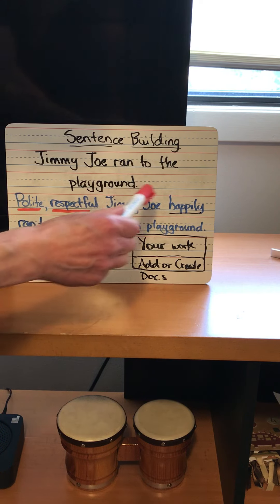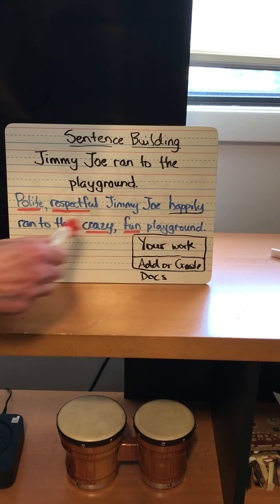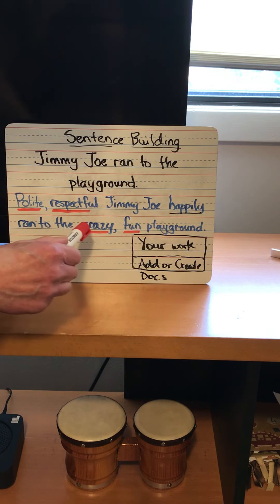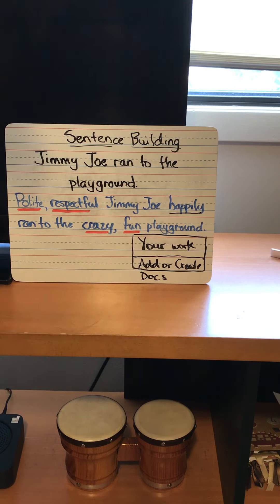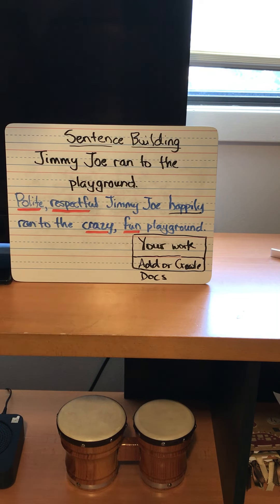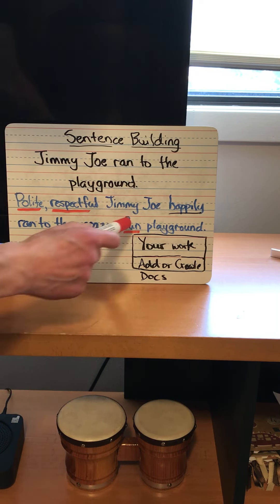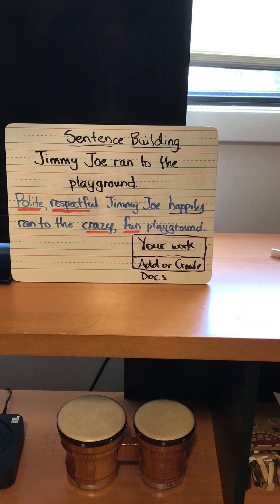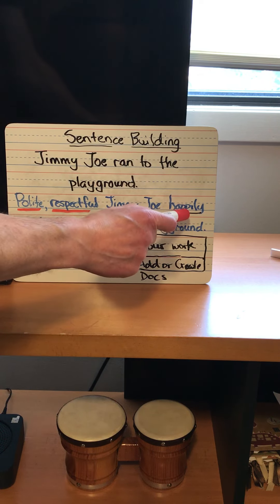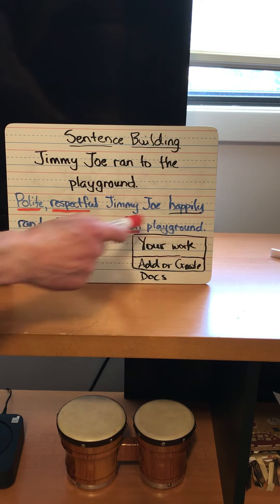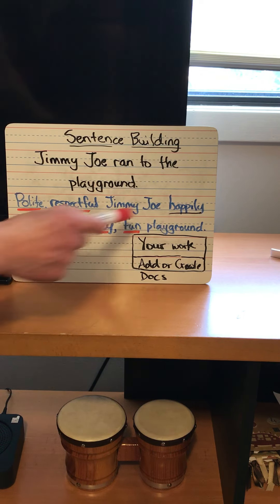"Polite, respectful Jimmy Joe happily ran to the crazy, fun playground." So you can see our adjectives here — "polite" and "respectful" to describe Jimmy Joe, and "crazy" and "fun" to describe the playground. And then we've used our adverb "happily" to describe the verb "ran."